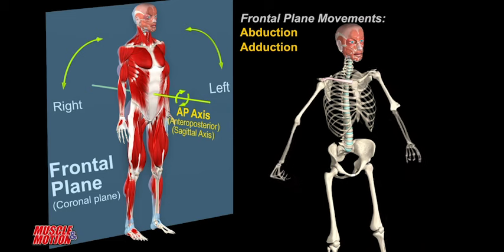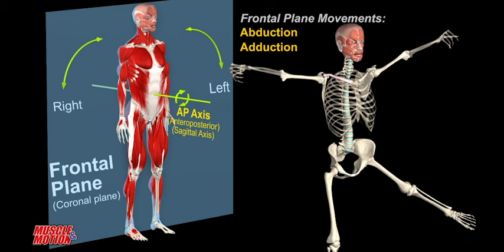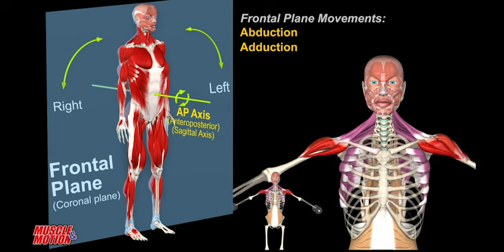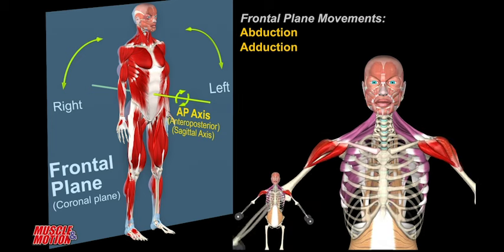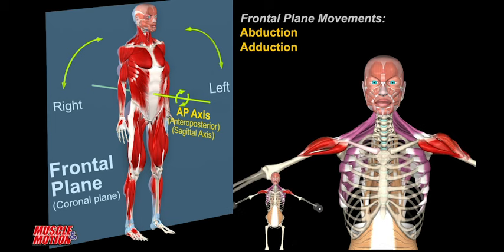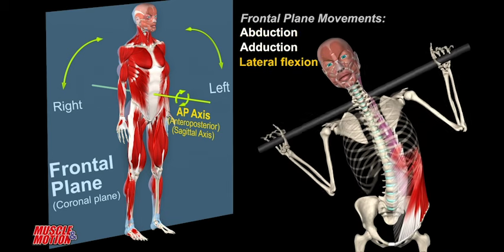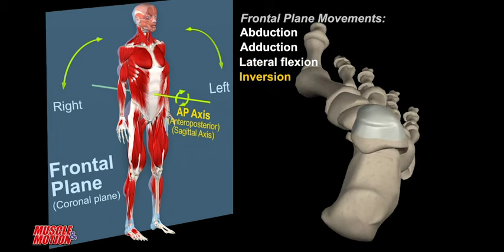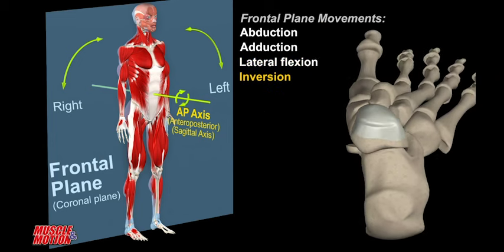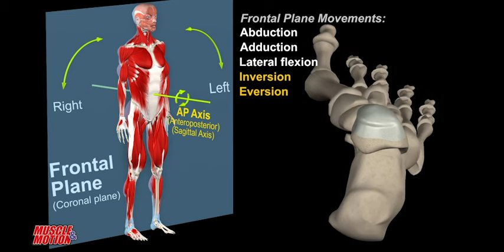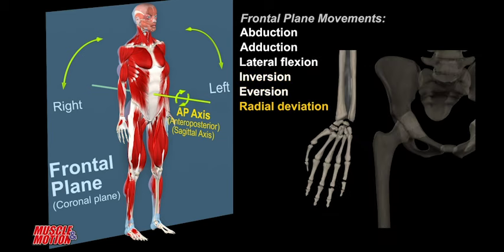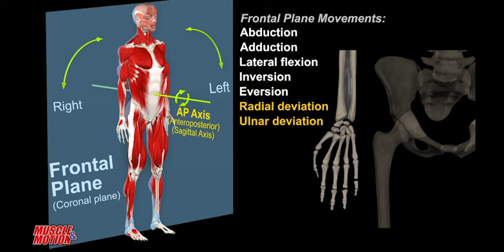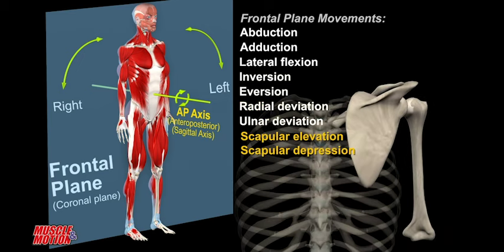For example: abduction and adduction, lateral flexion of the spine, foot inversion and eversion, wrist radial and ulnar deviation, and scapular elevation and depression.